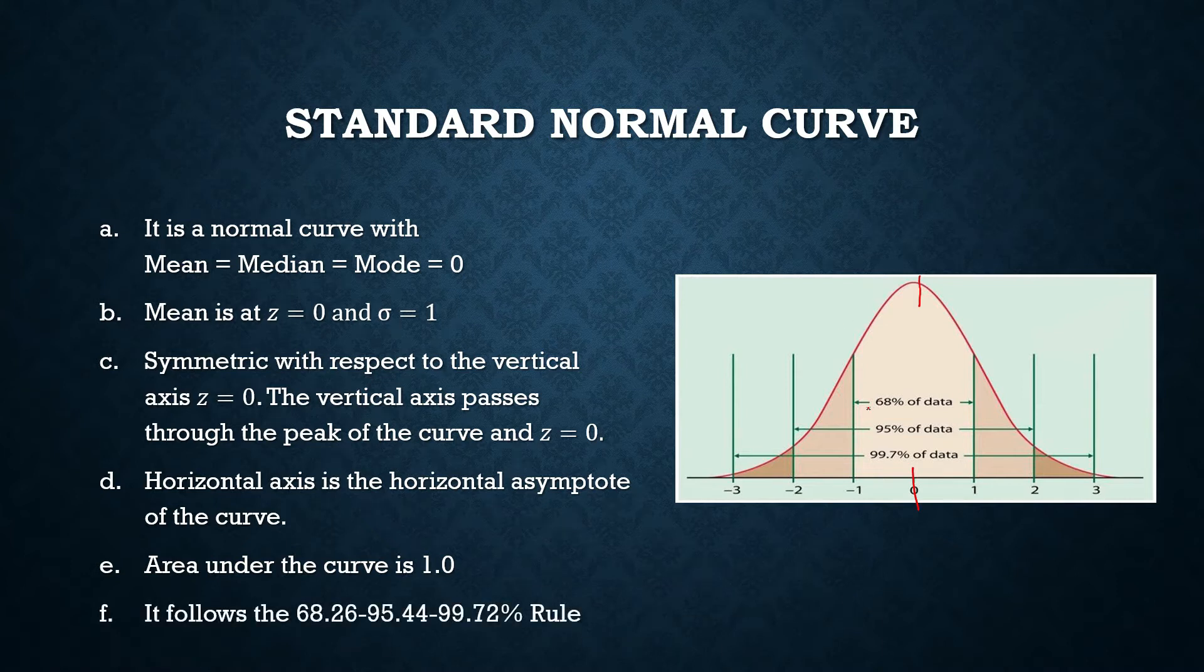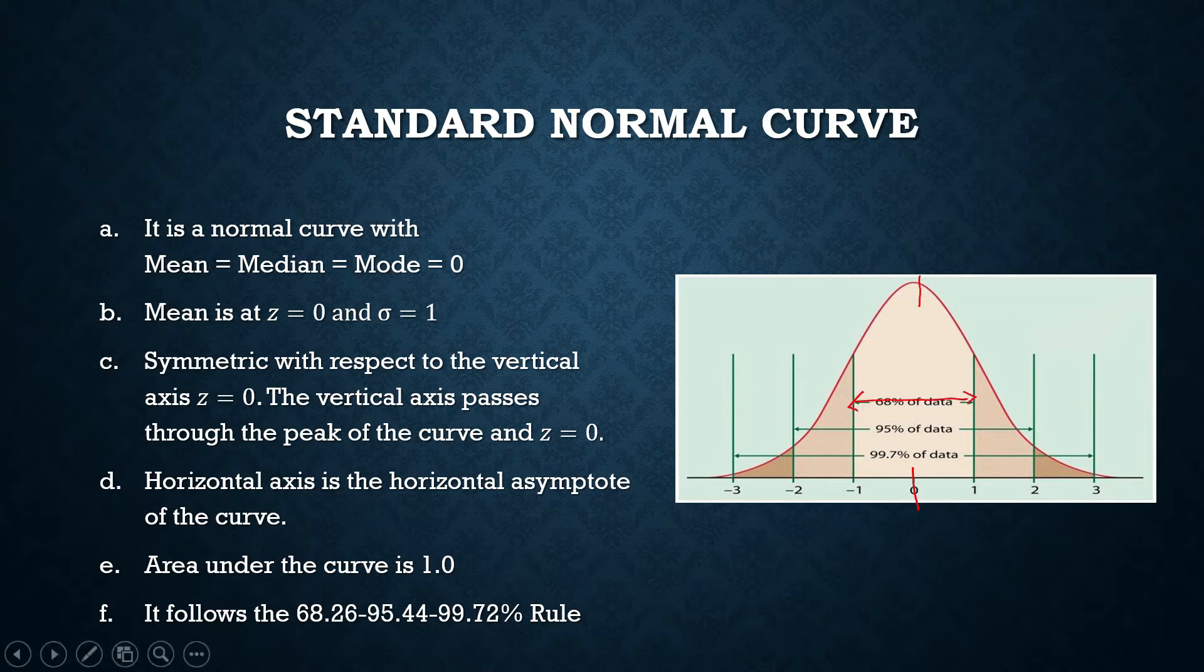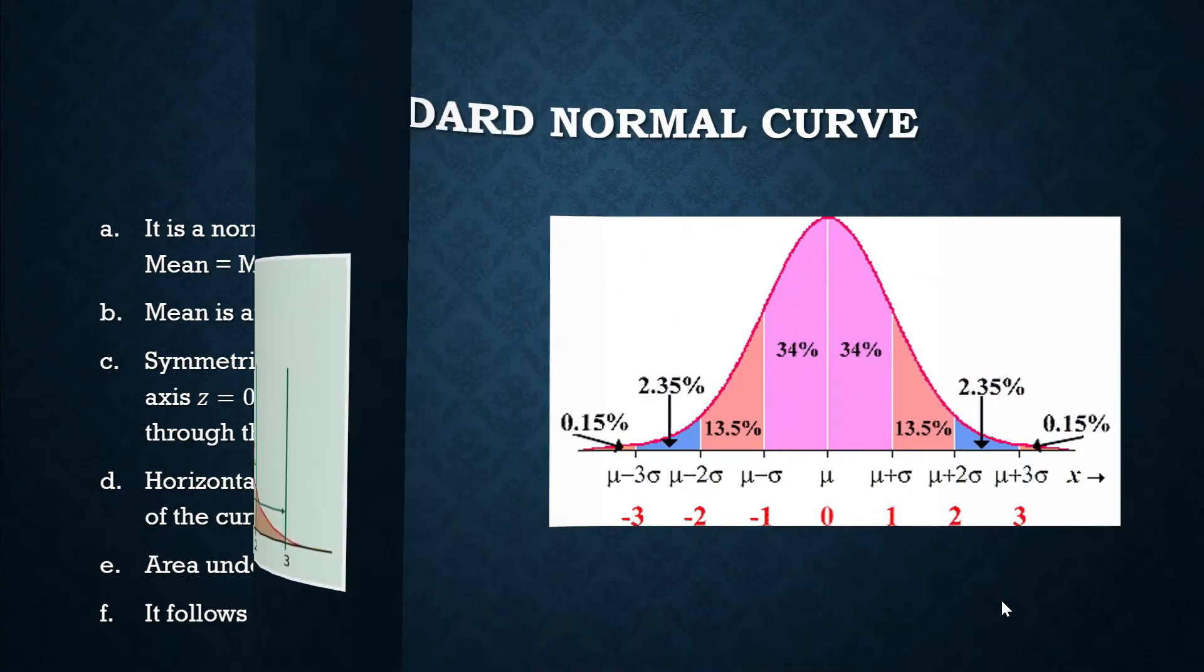And it follows this rule: 68.26% of our data values are to be found within one standard deviation from the mean, or from Z equals 0. 95.44% of our data values is to be found within two standard deviations from the mean. And 99.72% is to be found within three standard deviations from the mean. Again, this is our standard normal curve. The mean of our standard normal curve will coincide with Z when it is equal to 0.